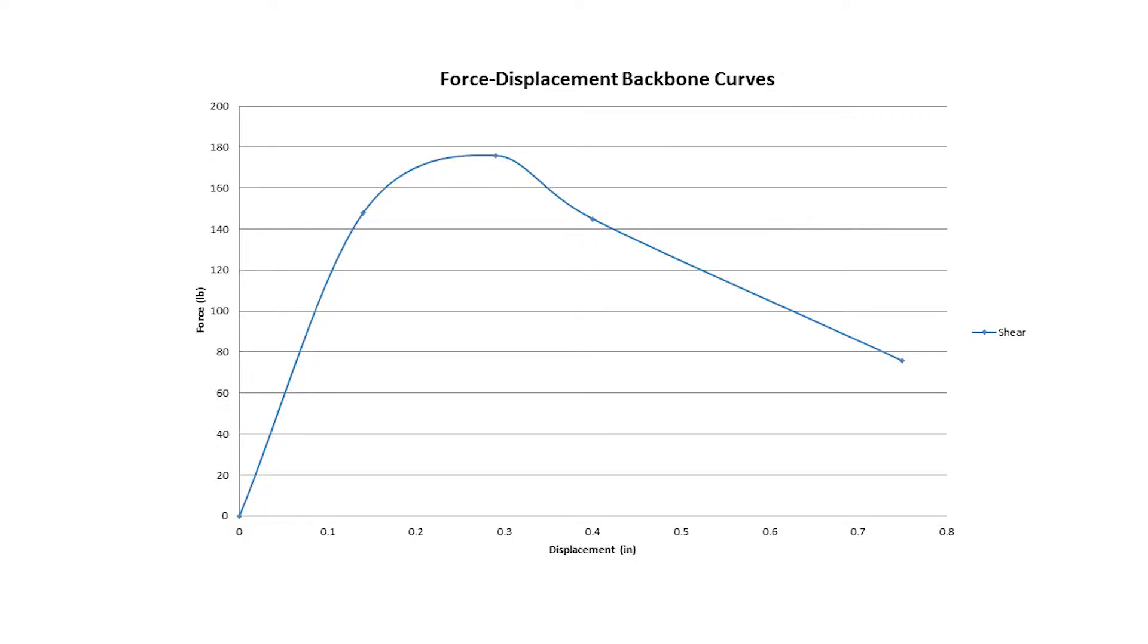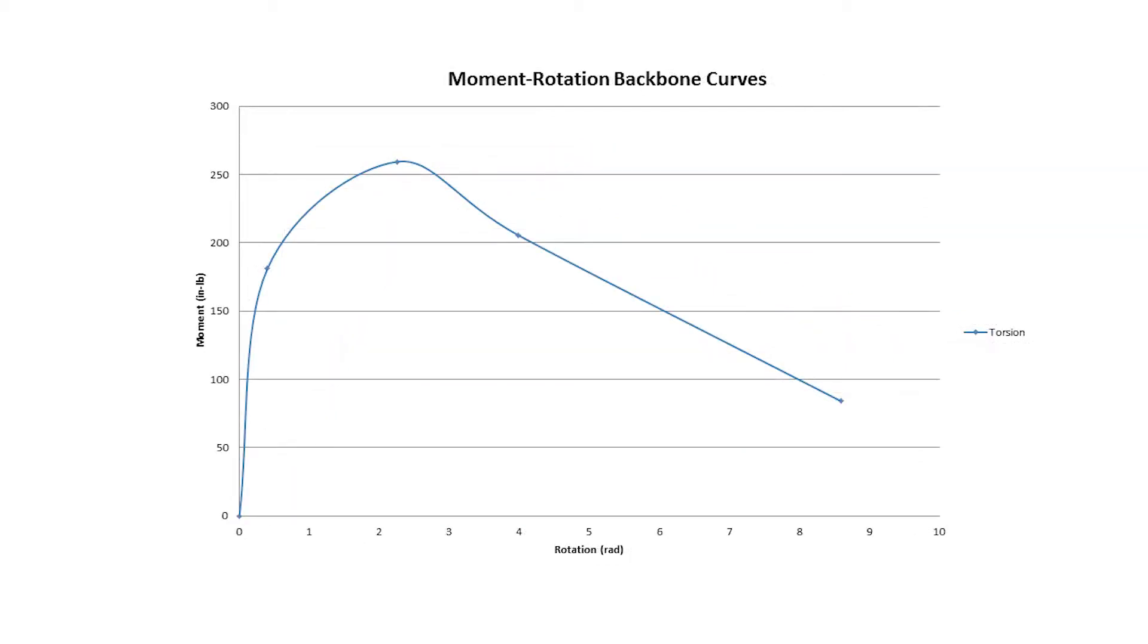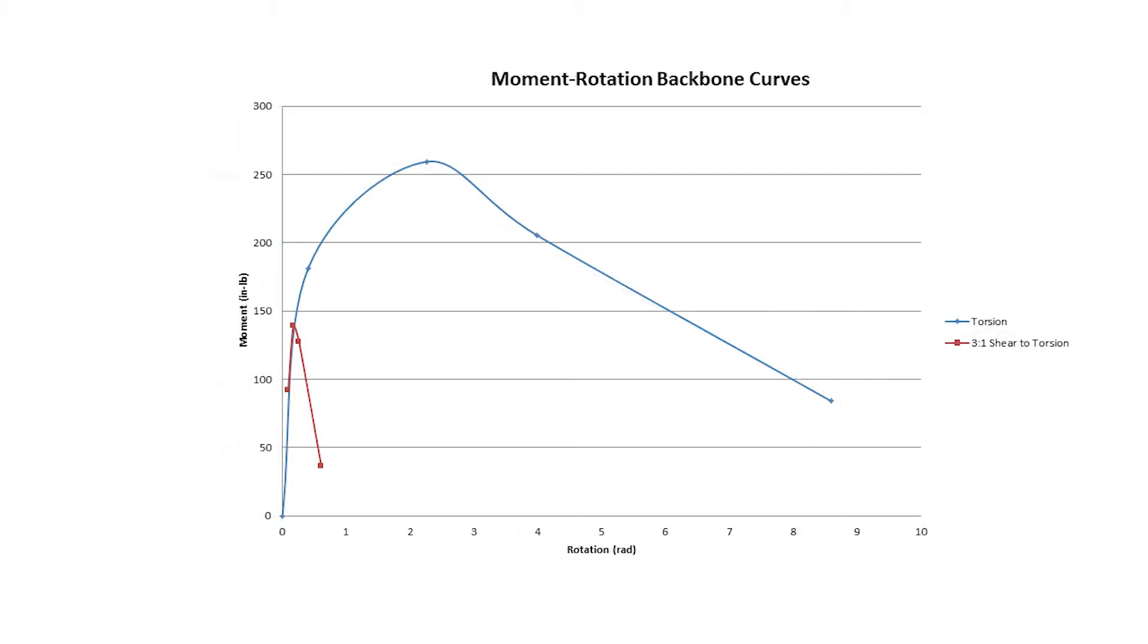Once again, under lower levels of torsion, the lateral shear capacity of the pier is not significantly reduced. However, with this high level of shear, the torsional capacity is dramatically reduced.